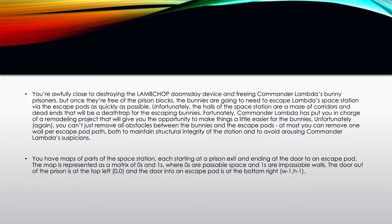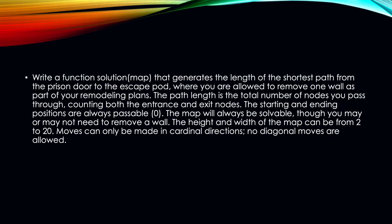From a given cell you can travel in cardinal directions — up, down, left, right — but not diagonally. You have to write a function that returns the length of the shortest path from the prison door to the escape pod, and you are allowed to remove one wall. The path length is the number of nodes you pass through, including the entrance and exit nodes. The starting and ending nodes are always passable, the maze is always solvable, and height and width can be anything from 2 to 20.